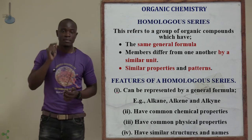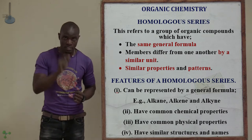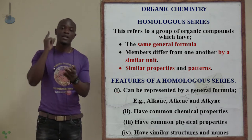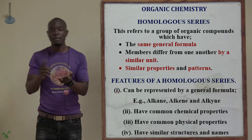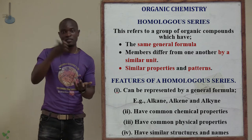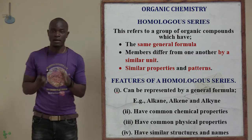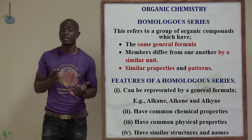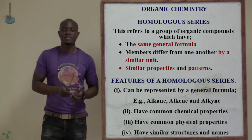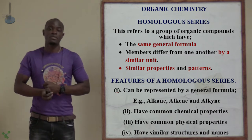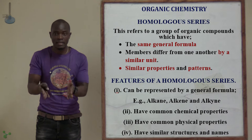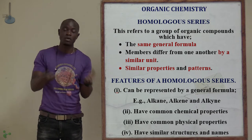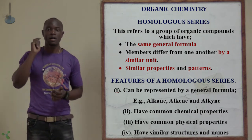For the homologous series, you see that the members differ from one another by a similar unit. For example, the first member is different from the second member by a value of 1, the second from the third by 1, and the third from the fourth by 1. Also, for the members of the homologous series, they have the same chemical and physical properties. For example, if you burn alkanes they don't produce soot, alkenes produce less soot, and all alkynes produce a lot of soot.